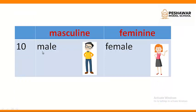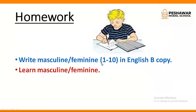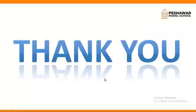The last pair is male and female: male means a boy or man, and female means a girl or a woman. So these were the ten masculine-feminine pairs in your course. You have to write and learn this masculine-feminine in your English B copy. Thank you, take care, stay safe. Allah Hafiz.